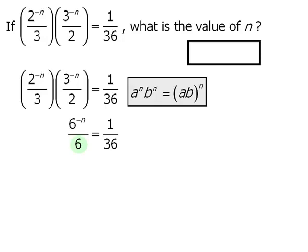Next, let's take the 6 here and rewrite it as 6 to the power of 1. And on the right-hand side, we can rewrite 1 over 36 as a power of 6. We can rewrite this as 6 to the power of negative 2.